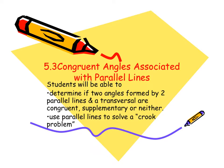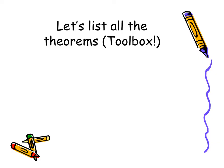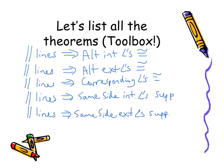In Section 5.3, we're going to determine if two angles formed by two parallel lines and a transversal are congruent, supplementary, or neither. Let's list all the theorems we just learned. If parallel lines are cut by a transversal, then alternate interior angles are congruent; alternate exterior angles are congruent; corresponding angles are congruent; same side interior angles are supplementary; and same side exterior angles are also supplementary.